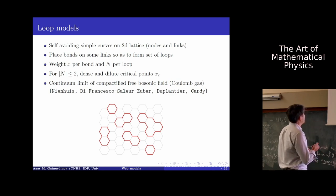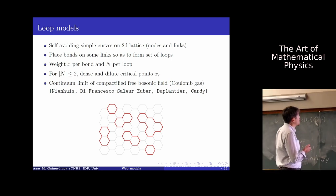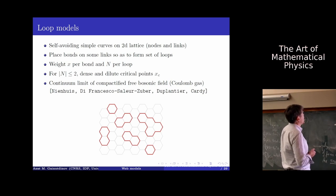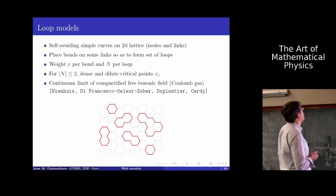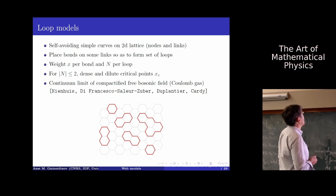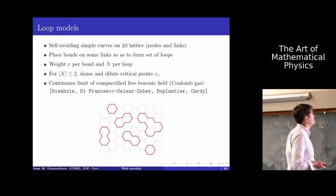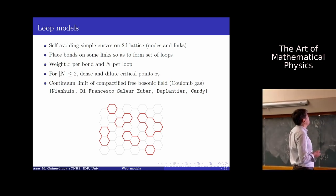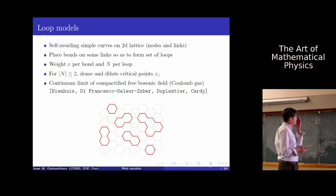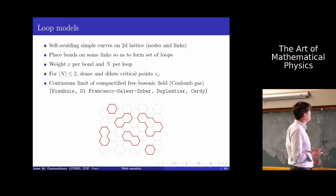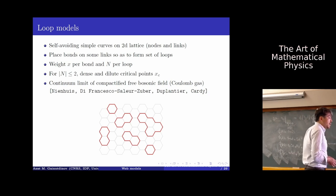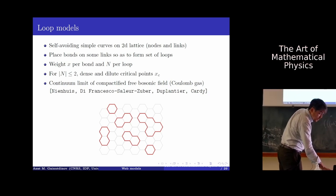The model has a weight n, and it is known that when the modulus of n is less than or equal to 2, the model has critical points in dilute and dense regimes. Many people have studied this model since the end of the 1970s, especially in the 80s.